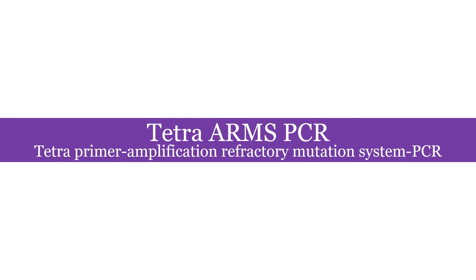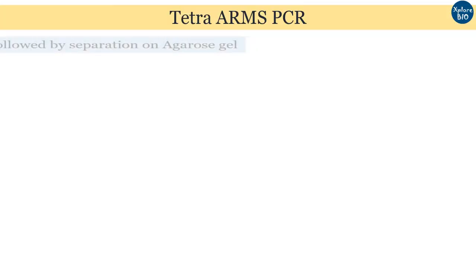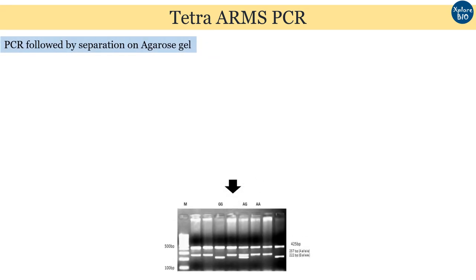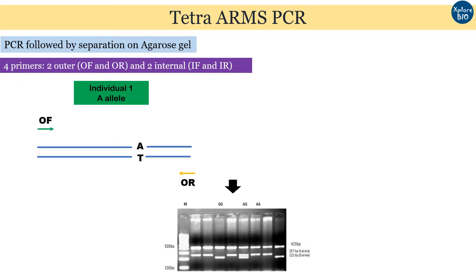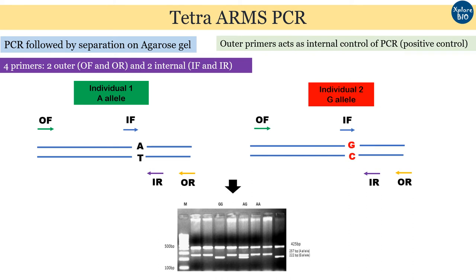Let's begin learning about one of the most economical and rapid mutation detection techniques: Tetra-Arms PCR, or Tetra Primer Amplification Refractory Mutation System PCR. The technique involves a single PCR followed by gel electrophoresis. It utilizes four primers — two outer primers and two inner primers — in a single PCR step. The outer primer combination generates a large fragment in all genotypes and acts as an internal control for the PCR reaction. The internal forward/outer reverse and outer forward/internal reverse primer combinations yield allele-specific amplicons of different sizes that can easily be discriminated on gel electrophoresis.